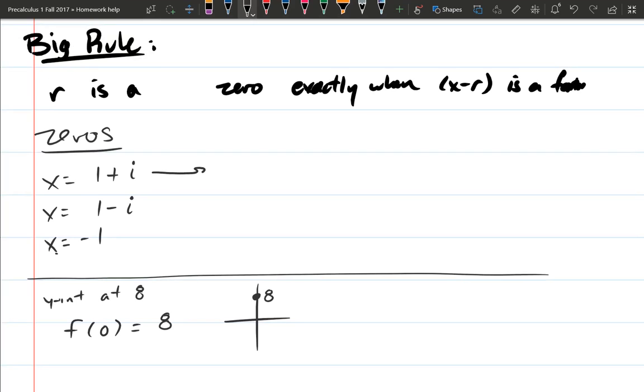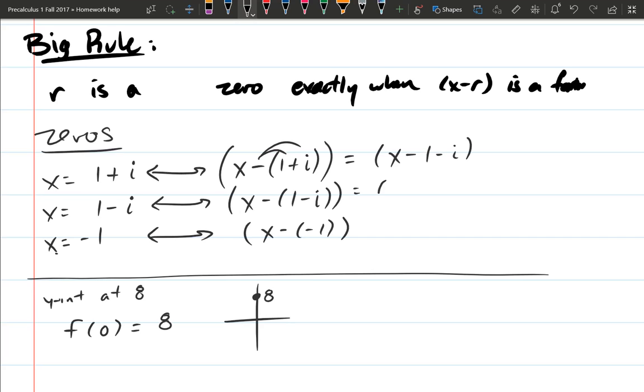So let's go ahead and apply this big rule here. This is a correspondence. So I have a zero. The factor it corresponds to is x minus that zero. Now in order to properly subtract, you really need to subtract the whole 1 plus i, not just subtract the 1. I like to put factors in parentheses. Our next correspondence is x minus 1 minus i. And last one, we have x minus minus 1. You can definitely simplify these a little bit if you want to. You can distribute your negative sign here. So you have x minus 1 minus i, x minus 1 plus i, and the last one here is just x plus 1.